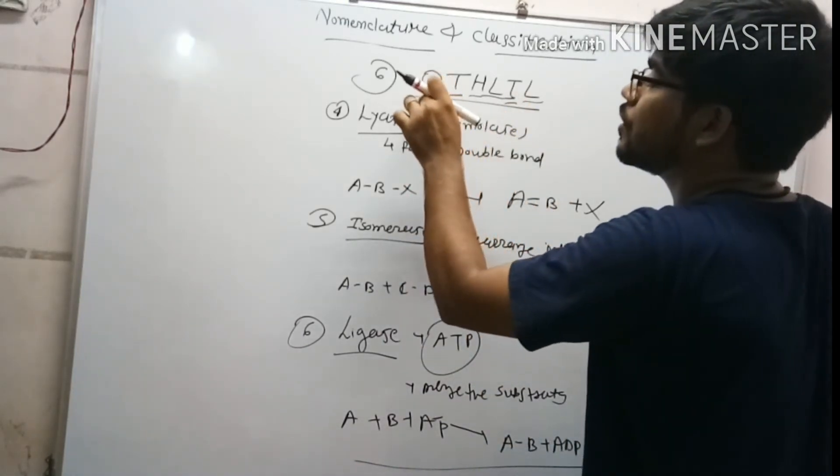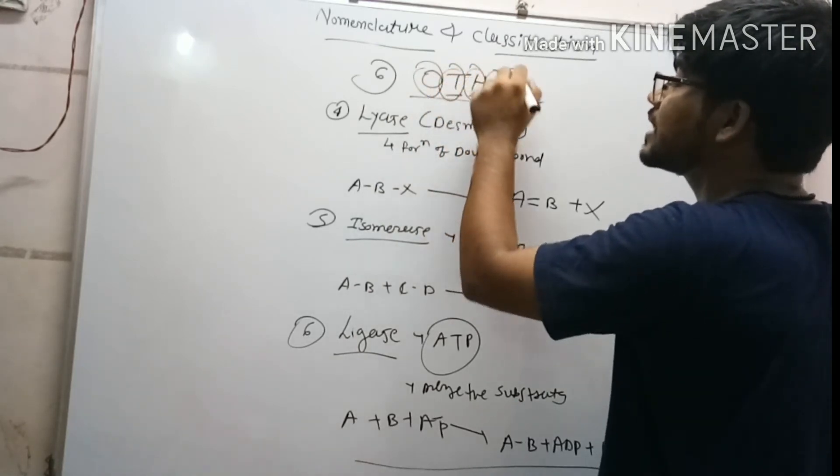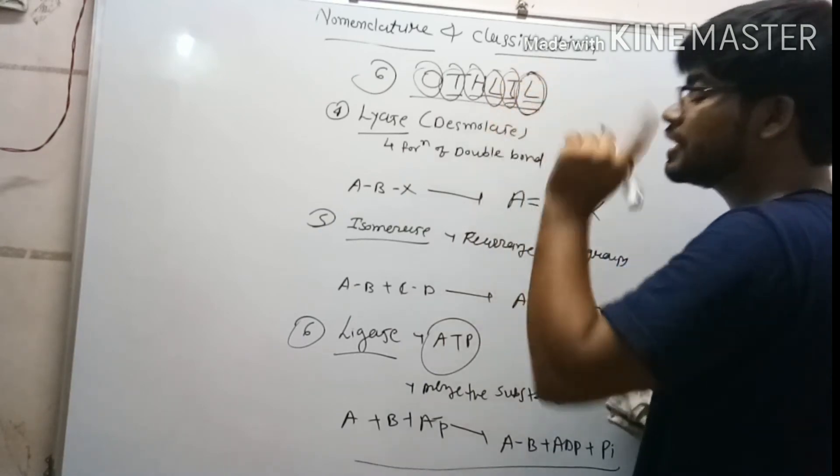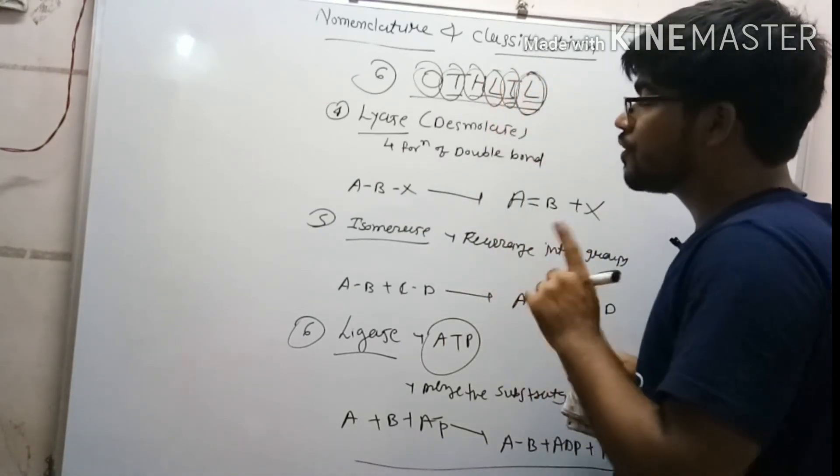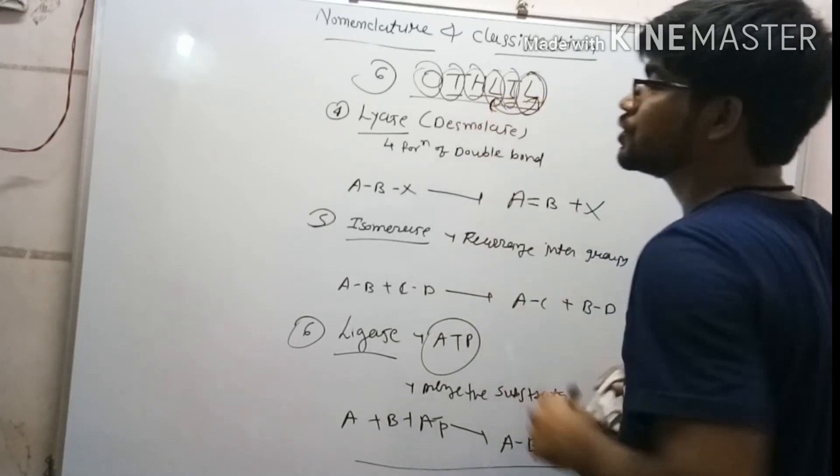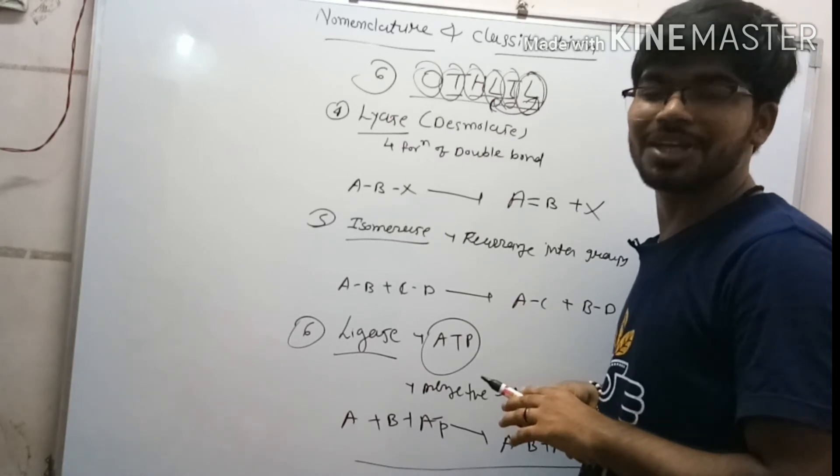There are six types of enzyme classes. We know that OTHLIL means oxidoreductase, transferase, hydrolase, lyase, isomerase and ligase. Only the ligase requires ATP for the bond formation. Ligase and lyase are totally reversed from each other. I hope you understand. Please like my video, share to your friends and keep watching my video. Thank you.